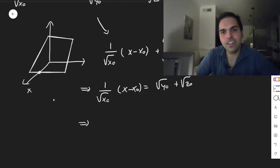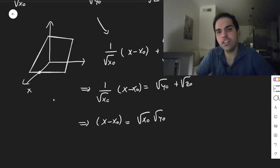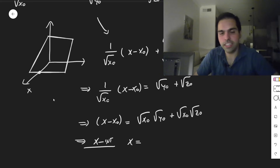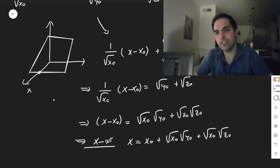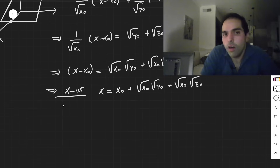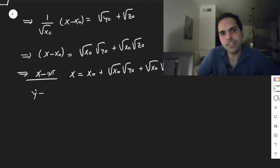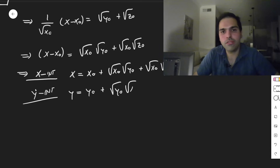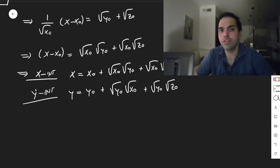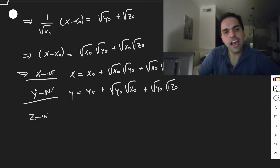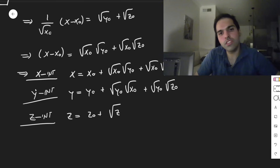Solving for x, we get x − x₀ = √x₀·√y₀ + √x₀·√z₀, so the x-intercept is x = x₀ + √x₀·√y₀ + √x₀·√z₀. Then by symmetry — you can redo this whole thing, but by symmetry — the y-intercept is y = y₀ + √y₀·√x₀ + √y₀·√z₀, and the z-intercept is z = z₀ + √z₀·√x₀ + √z₀·√y₀.